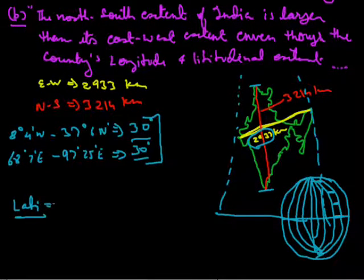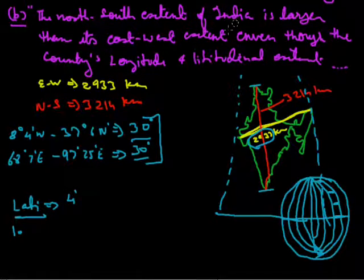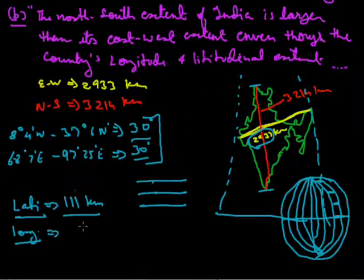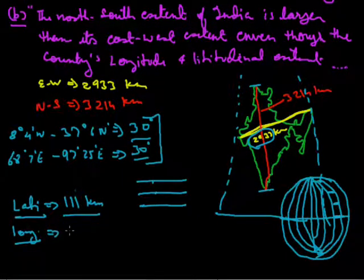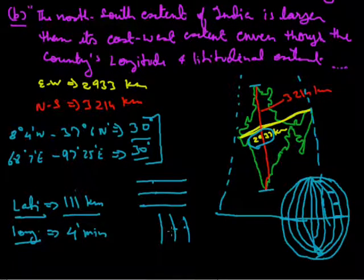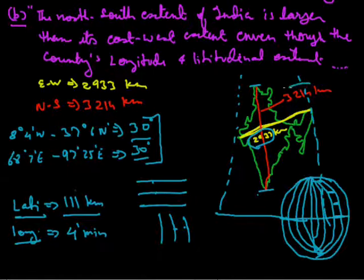If you look at latitudes, the distance between each latitude is consistently 1 kilometre. They are all parallel. On the other hand, the distance between longitudes cannot be counted in kilometres because they converge. Instead, we count it in time — 4 minutes is the time difference between two consecutive longitudinal lines. This means the sun takes 4 minutes to move from one longitudinal line to the next.